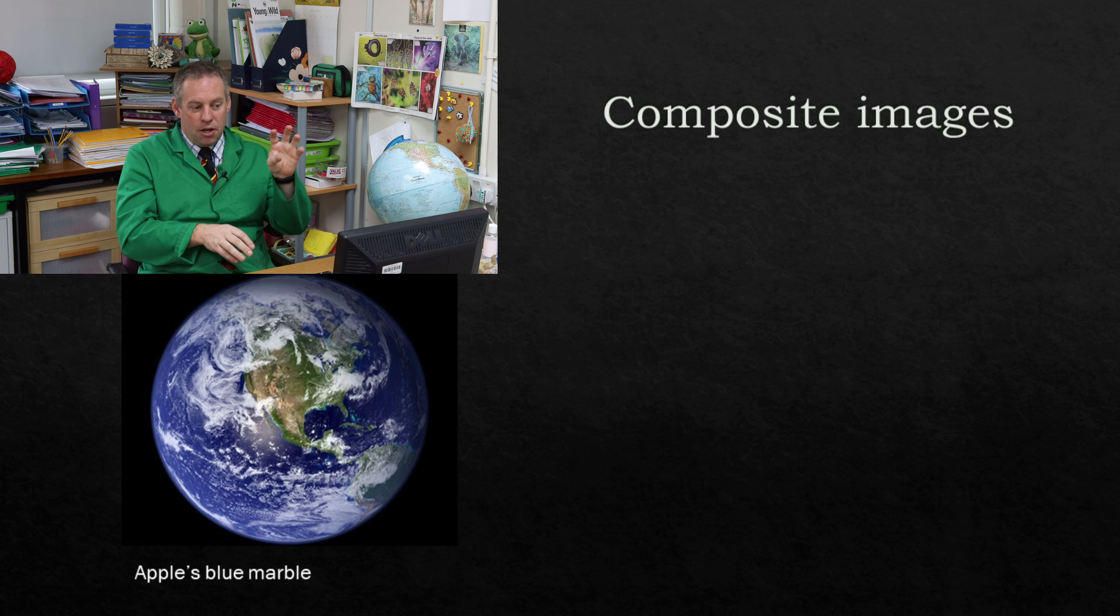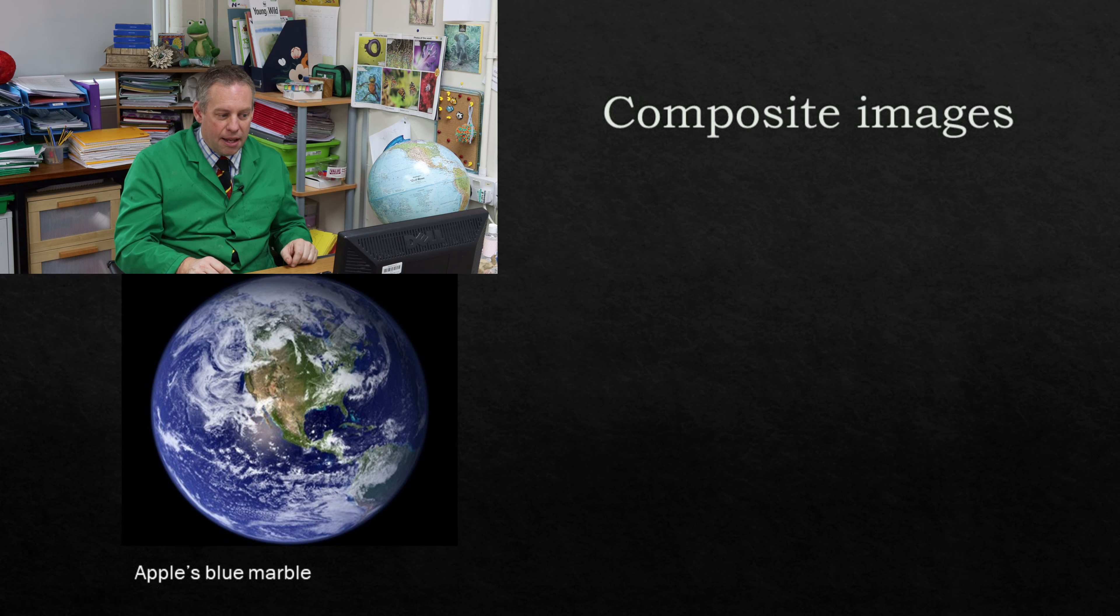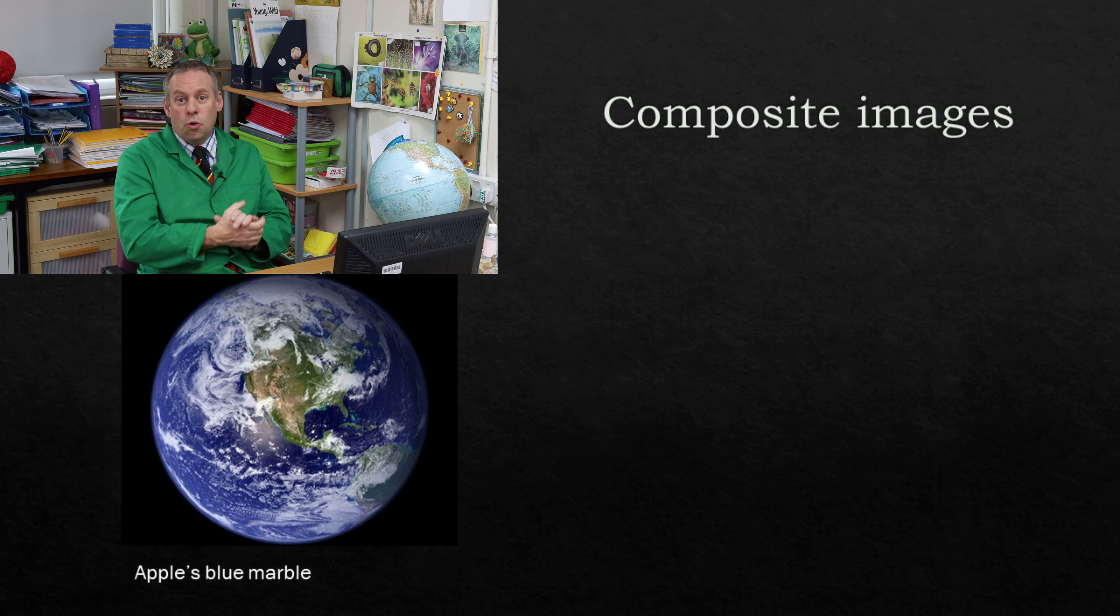And so the images that you see are something called composite images where they'll take hundreds of photos of the earth and they'll use a computer to put all of them together to create a whole image of the earth. This also enables us to do a picture that shows everything in daytime because otherwise you'd have to be exactly the position of the sun in order to take that photo. This way we can take photos of areas when they're in the right position and then add it all together. And so this was a very famous picture of the earth taken from various different satellites. So we're going to use that and we're going to look at what happens for a day and I'm going to talk about two types of day.